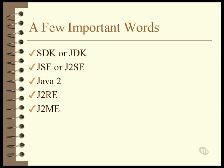The letters ME stand for Micro Edition. The J2ME is for writing embedded systems for such things as automobile engines and answering machines. We won't be using the J2ME in this course. The letters EE stand for Enterprise Edition. It's an add-on collection of classes that can be used to extend the capabilities of the Standard Edition. It does not contain the SDK — it is for use with the J2SE. We won't be using the J2EE in this course.